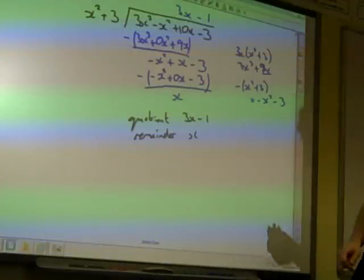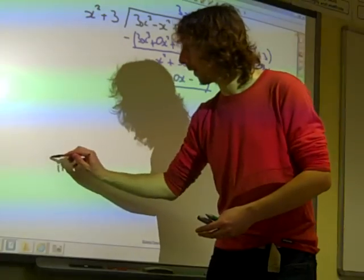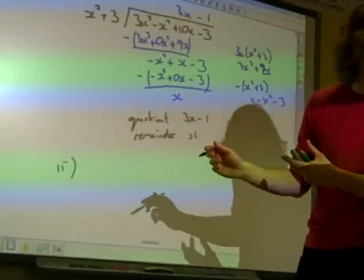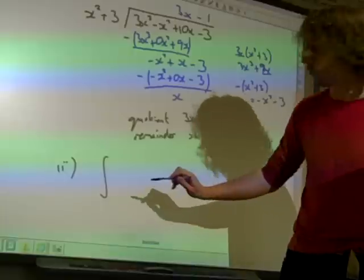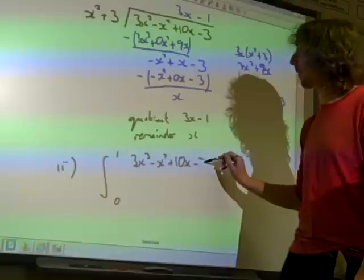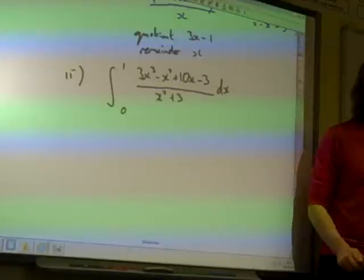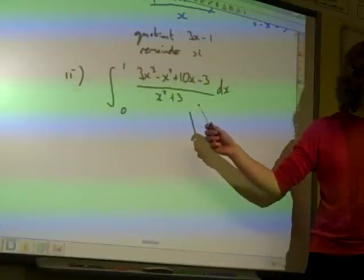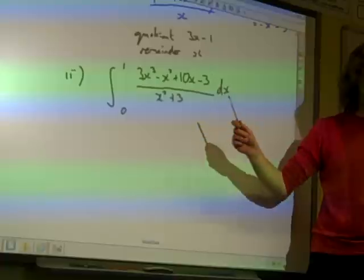Although we've not really been working through the topics on this, we'll do the next part because it tells us something about how we use division for other things. The next part asks us to integrate that expression between 0 and 1: (3x³ - x² + 10x - 3)/(x² + 3) dx. The point is, can we use what we've just done to make this easier? We just found that this division gives us a quotient of 3x minus 1 and a remainder of x.